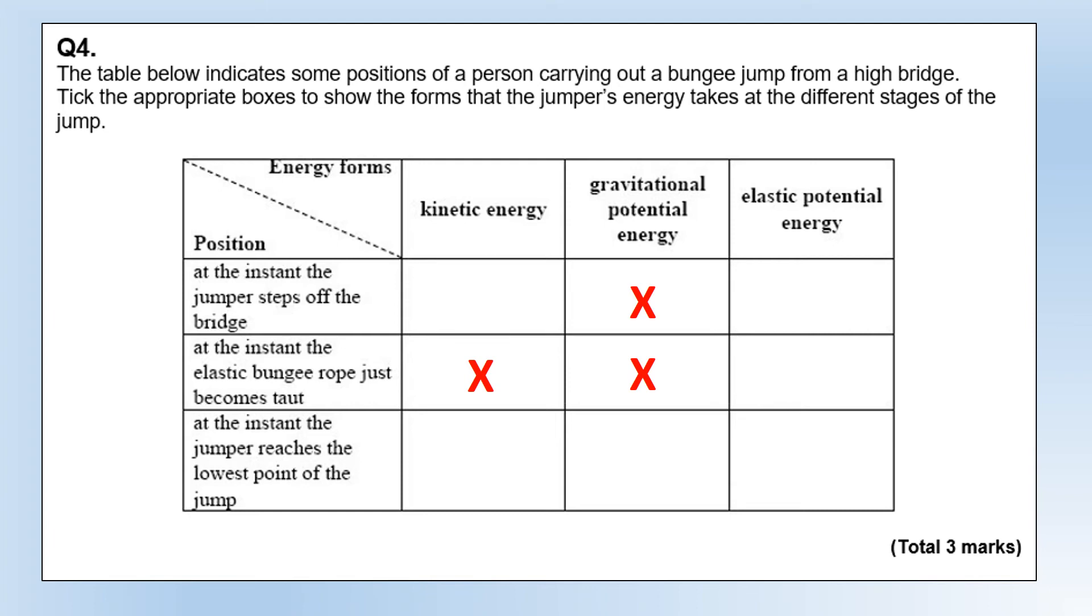At the instant the jumper reaches the lowest point on the jump, they're going to have elastic potential energy—all of their kinetic energy has been transferred because they're stationary at their lowest point. You could definitely argue they still have some gravitational potential energy depending on where you put the zero line, so you didn't need to have it but you certainly could for this question.